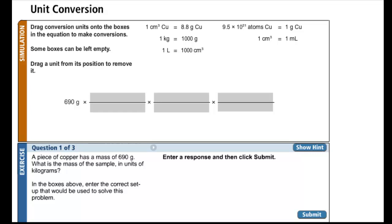In this problem, you're asked to essentially convert 690 grams of copper to kilograms of copper. One of the ways to approach this is to realize that we need to cancel out the unit grams in the first step. And then ask, am I aware of a conversion factor that will convert grams to kilograms?